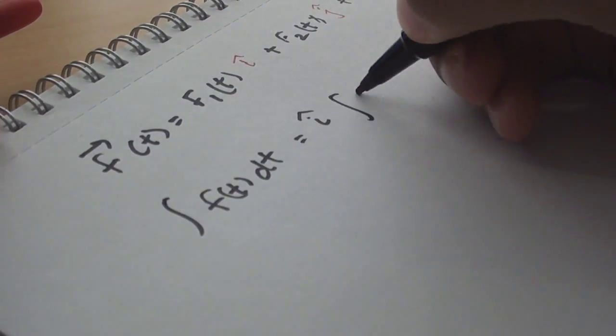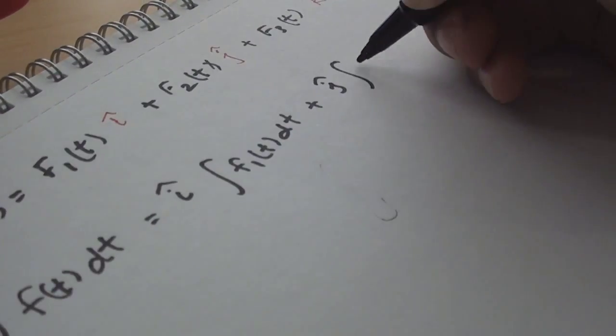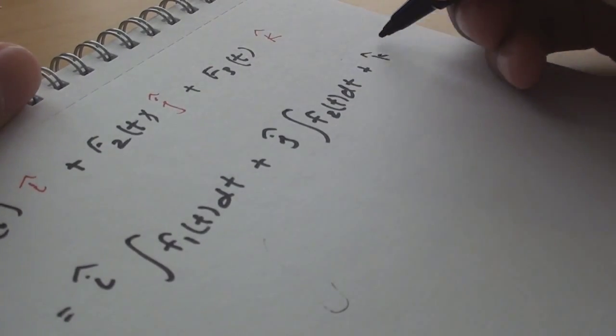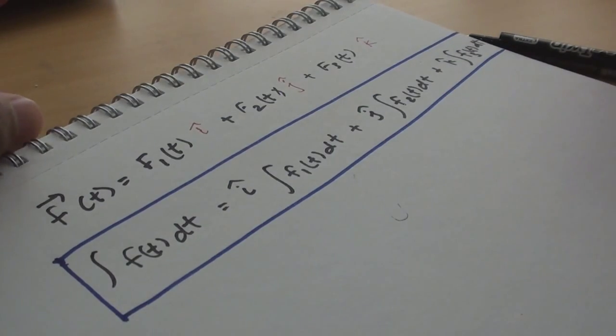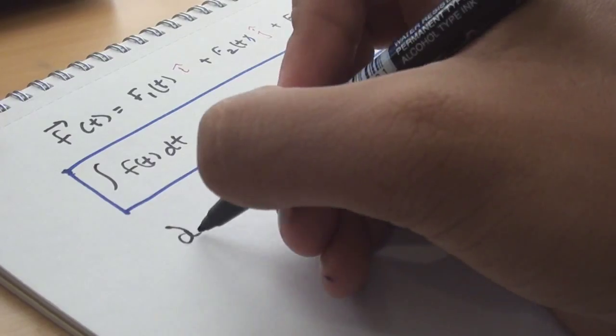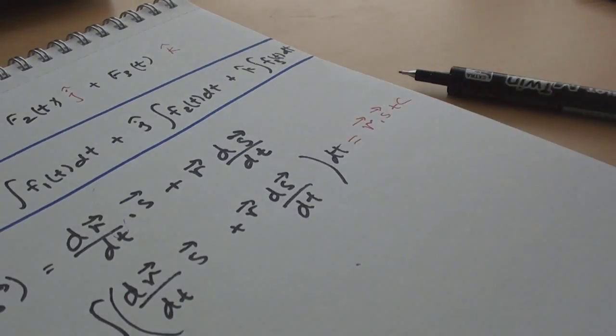In order to integrate a vector function, we integrate its components. That is, if we have a vector function f(t), then the integral of f dt equals to i times integral of f1(t)dt plus j times integral of f2(t)dt plus k times integral of f3 dt. And the integration of a vector function is defined as the reverse of the process of differentiation.